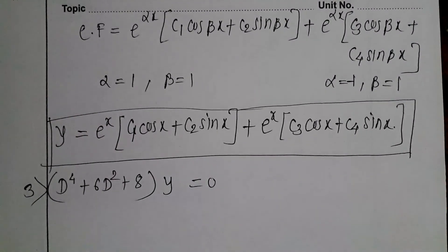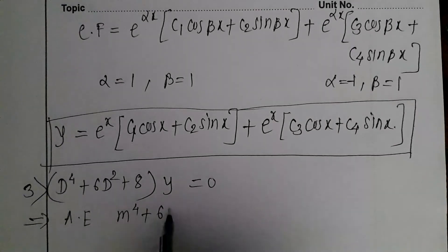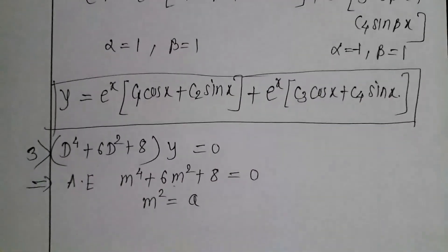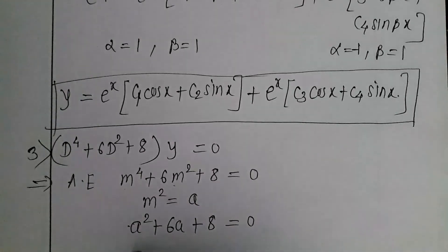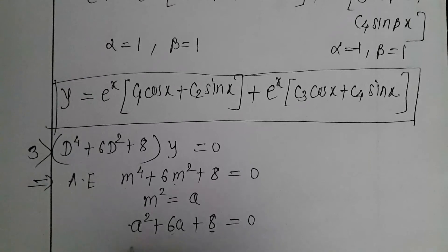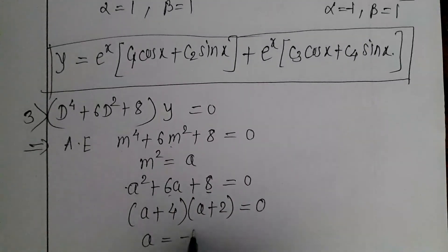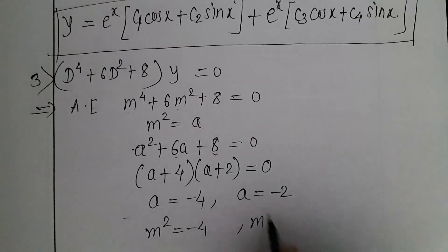The next example is (D⁴ + 6D² + 8)y = 0. The auxiliary equation is m⁴ + 6m² + 8 = 0. Since both terms have even powers of m (m⁴ and m²), we substitute A = m², giving A² + 6A + 8 = 0. Factoring: the product must be 8 and sum must be 6, so (A + 4)(A + 2) = 0, giving A = -4 and A = -2. Since A = m², we get m² = -4 and m² = -2.